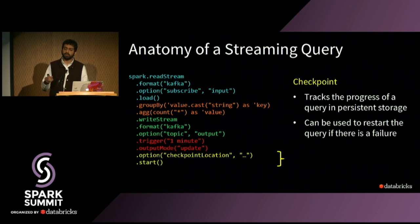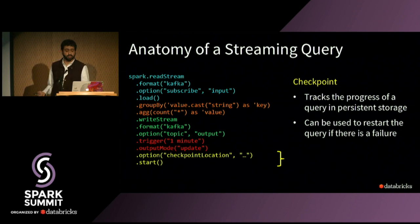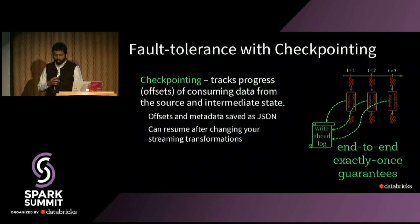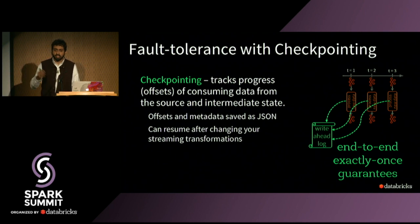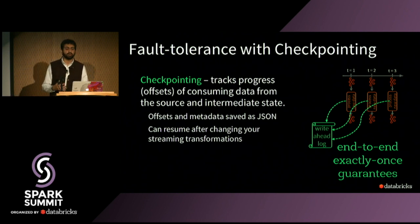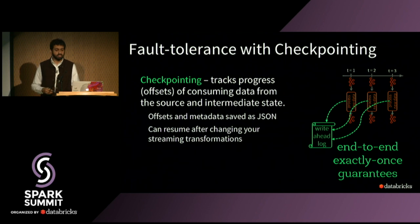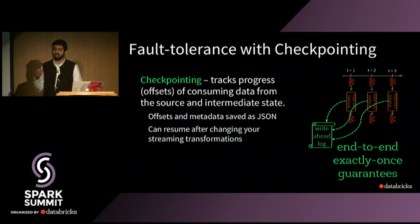For fault tolerance, you specify a checkpoint location where the Spark SQL engine writes the necessary data so it can recover seamlessly from any failures. Then you call start. Underneath, the system generates a series of incremental execution plans, keeps track of the exact set of Kafka offsets that each batch processes, and tracks them by writing to a write-ahead log. This gives end-to-end exactly-once guarantees for both stateless and stateful stream processing.